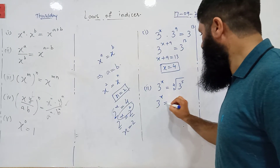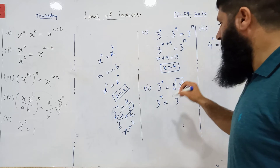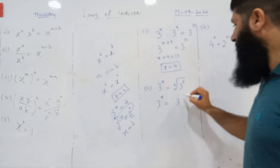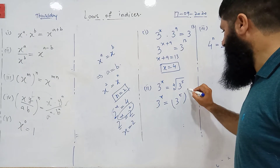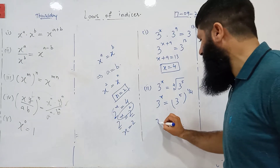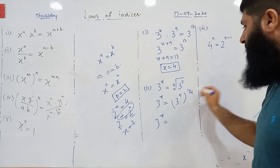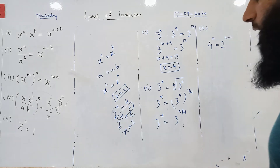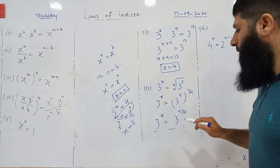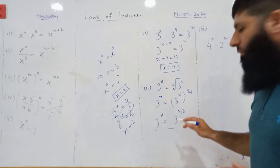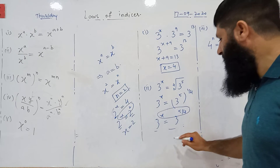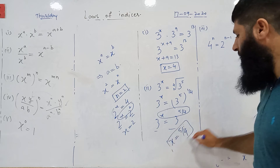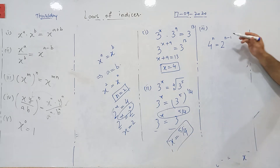Similarly, on the right hand side we have the 4th root of 3 raised to power 5. You know that we can multiply the index, so this becomes 3 raised to power 5 over 4. Again, we have the same base on both sides, so the indices will be equal: x is equal to 5 over 4.